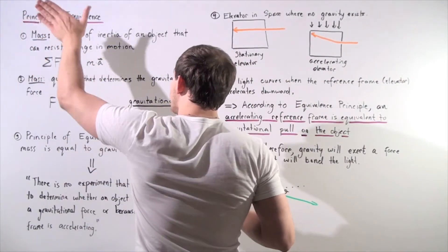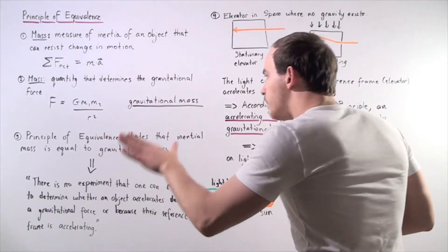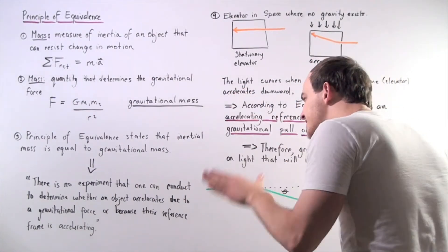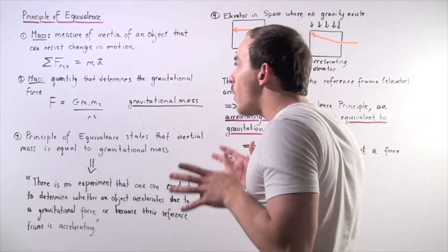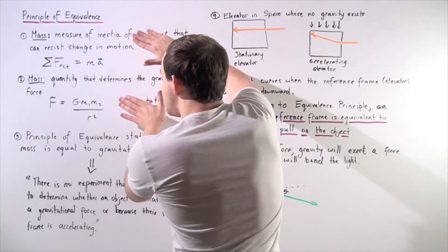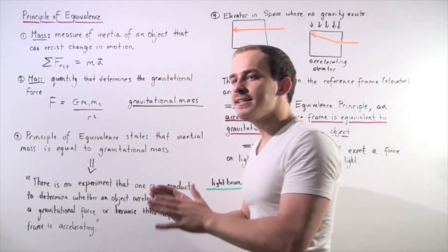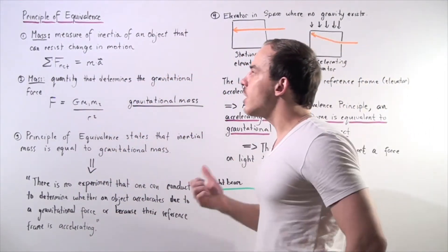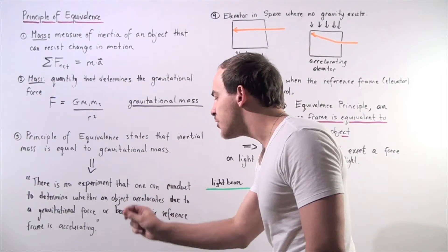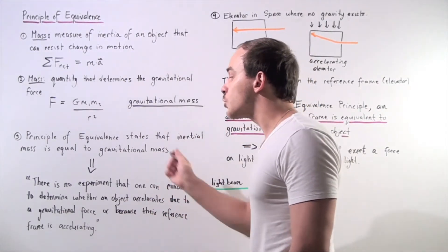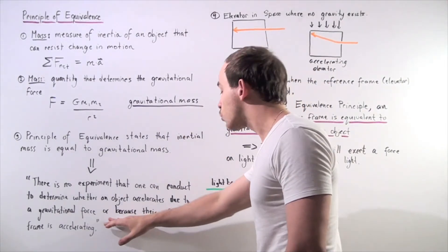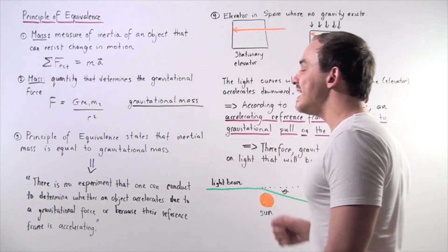Now, what the principle states is the following. The principle of equivalence states that inertial mass is equal to gravitational mass. In other words, there is no way that we can actually distinguish between these two definitions. And these two definitions are exactly identical. So we can say this in another way. There is no experiment that one can conduct to determine whether an object accelerates because of a gravitational force acting on it or because the reference frame in which the object is in is accelerating.